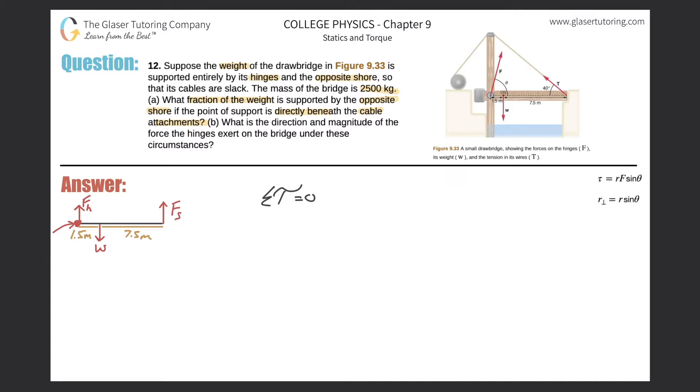The reason why I'm going to choose it to be there is because, remember when I'm trying to find the fraction of the weight supported by this shore, I actually want to try to take this out of my equation. So if I put the axis of rotation right beneath this force, the lever arm for this force is zero because it's right at the axis of rotation. So, the torque just drops out. So basically now if I assume my axis of rotation is here, I have now only two torques in my problem.